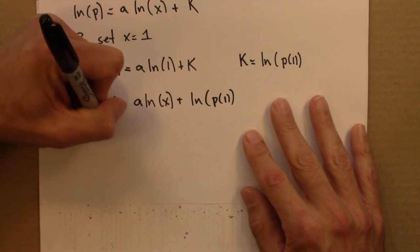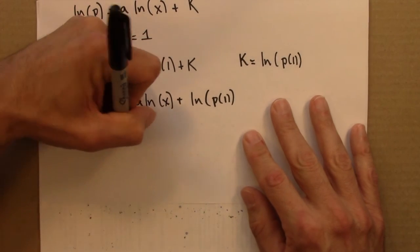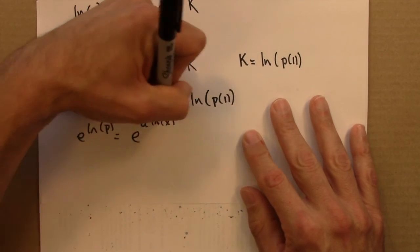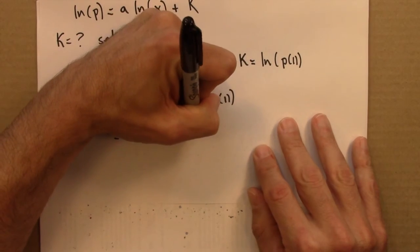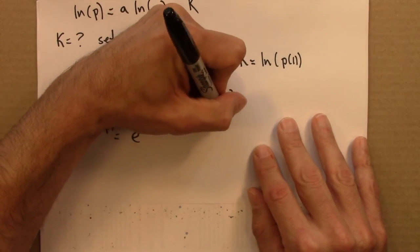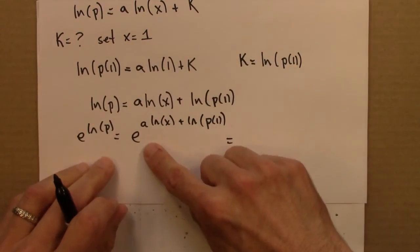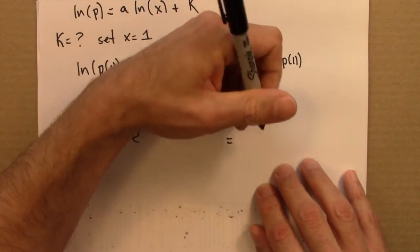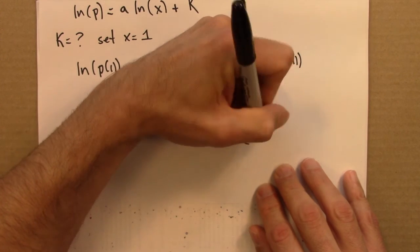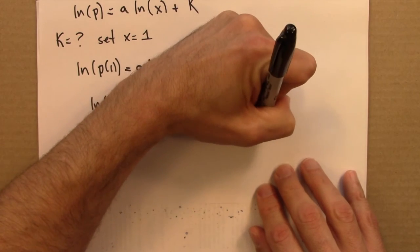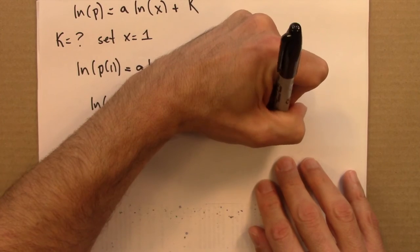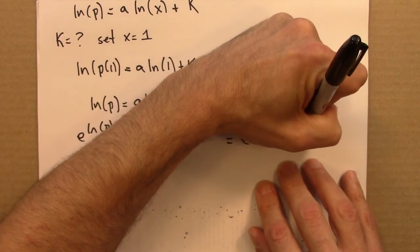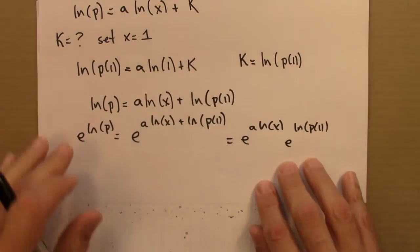So that's e to the log P equals... property of log says I can take this sum, turn it into a product. This is e to the a log x times e to the log P(1). And we're almost there. So e and natural log, they're inverses of each other. They undo each other. So this is P, P of x.